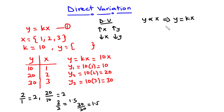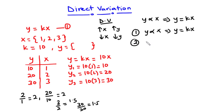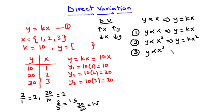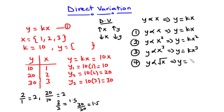Let's look at some other forms of relation that may exist. If y varies directly as x, that gives y equals kx. If y varies as the square of x, that gives y equals kx squared. If y varies as the cube of x, that gives y equals kx cubed. If y varies as the square root of x, that gives y equals k times the square root of x.